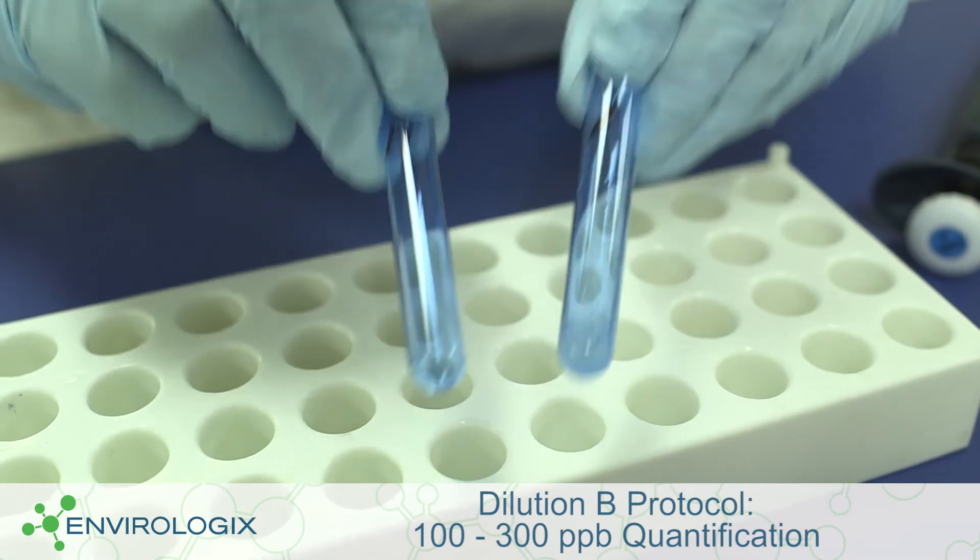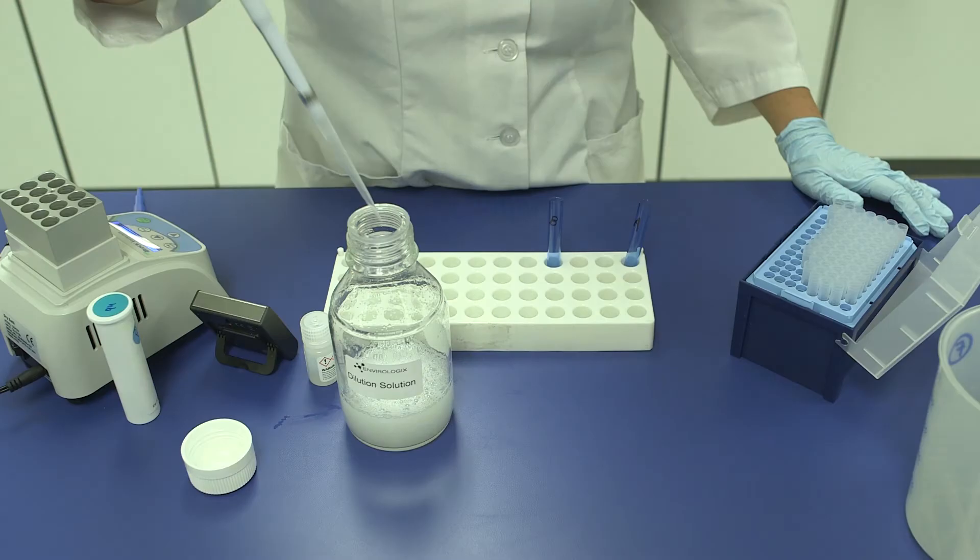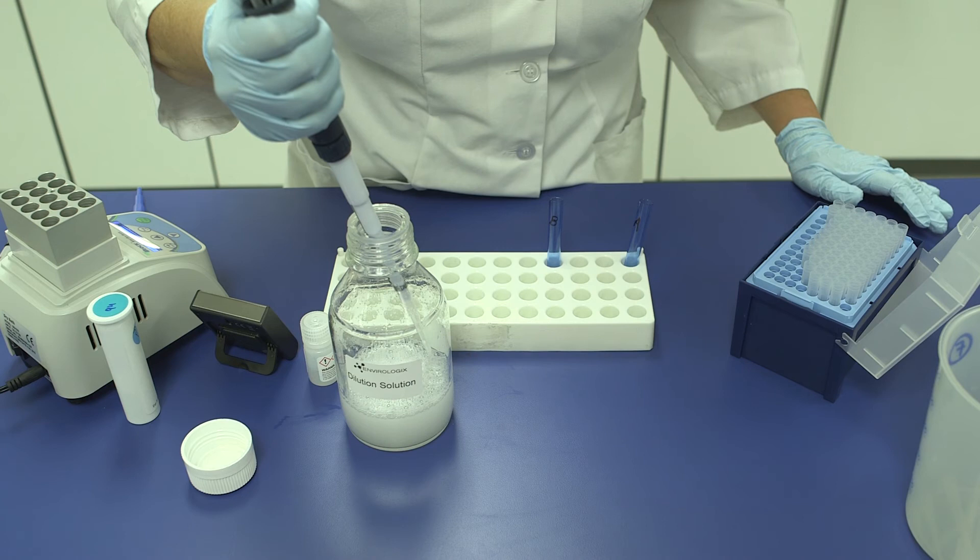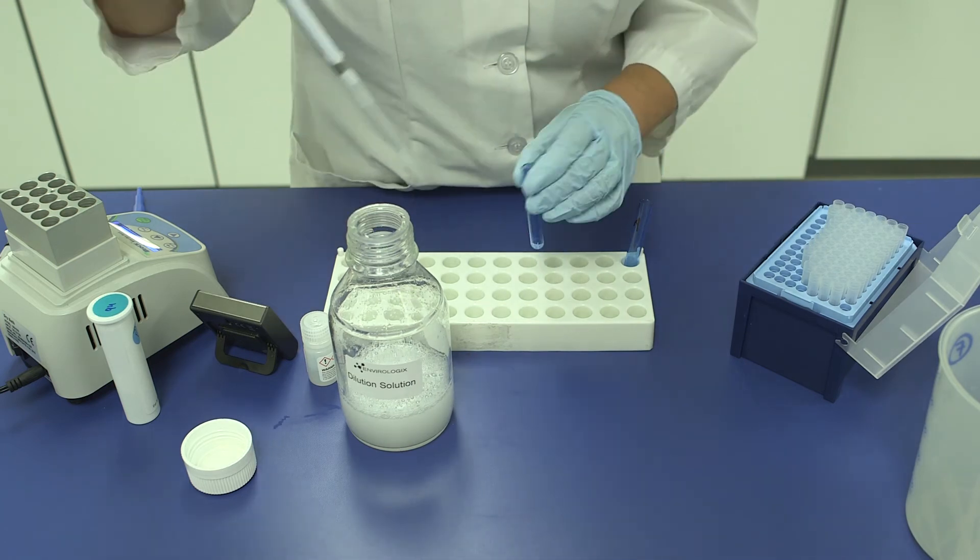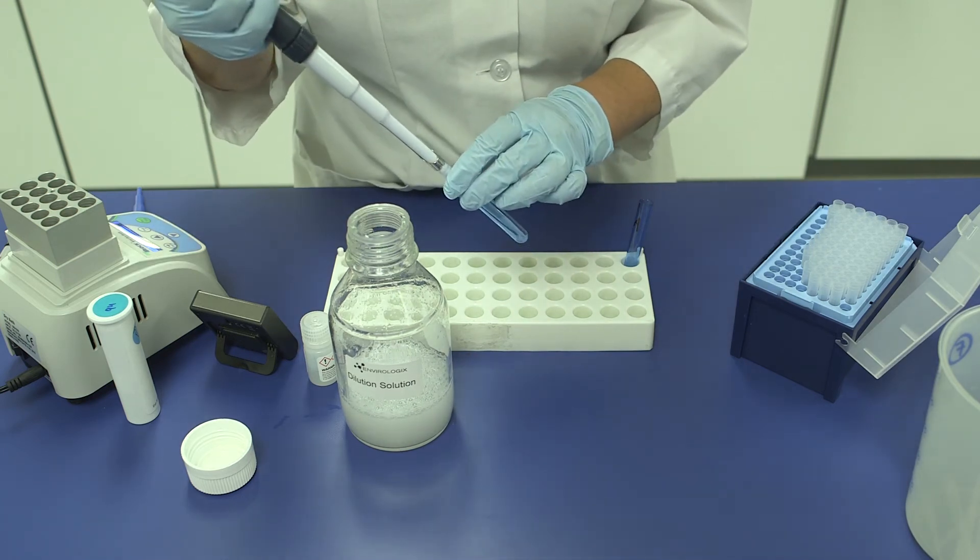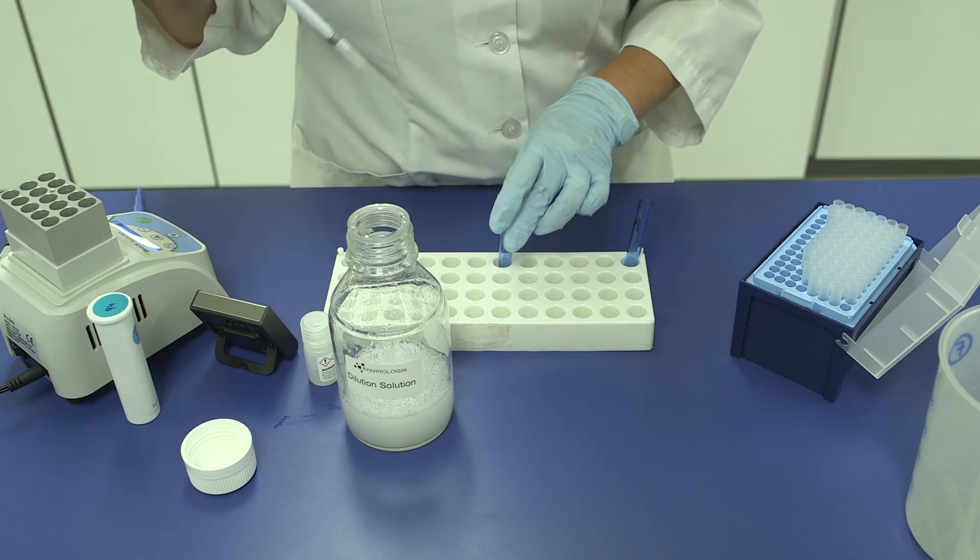Dilution B, Step 1. Add 200 microliters of well-mixed dilution solution and 100 microliters of the dilution A extract to a clean tube and mix well.